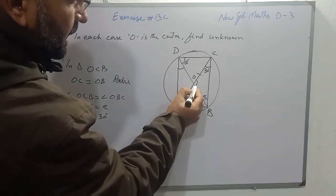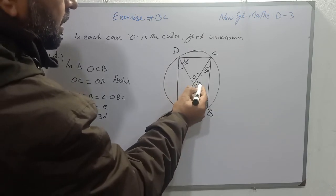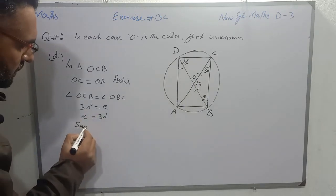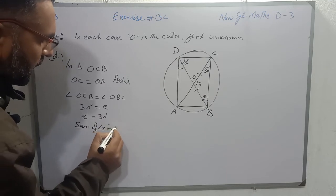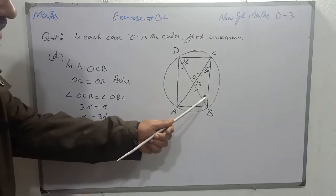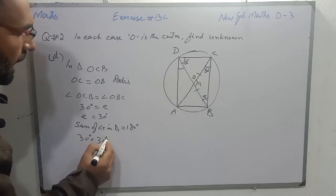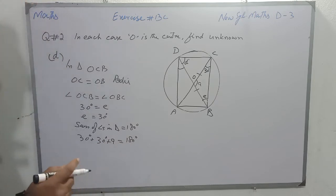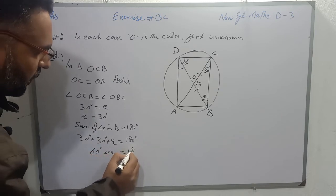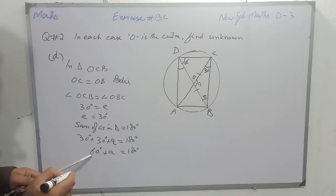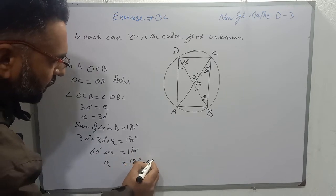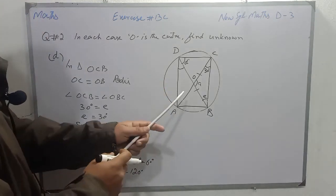Now we will find the value of angle A in triangle OCB. The sum of angles in a triangle is equal to 180 degrees. So 30 degrees plus the value of angle E, which is also 30 degrees, plus A equals 180 degrees. 30 plus 30 gives 60 degrees, so 60 plus A equals 180 degrees. Transferring 60 to the other side, the value of A becomes 120 degrees.